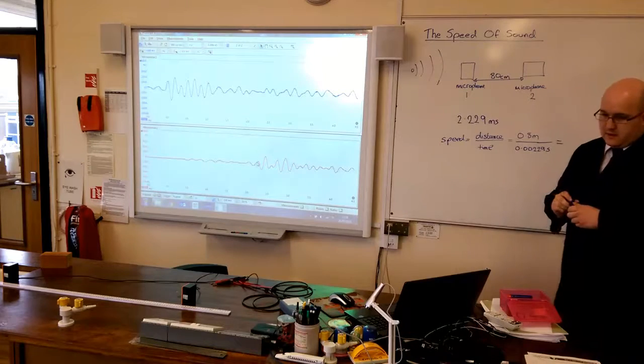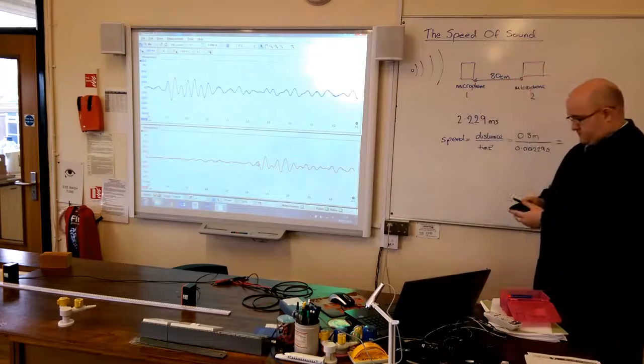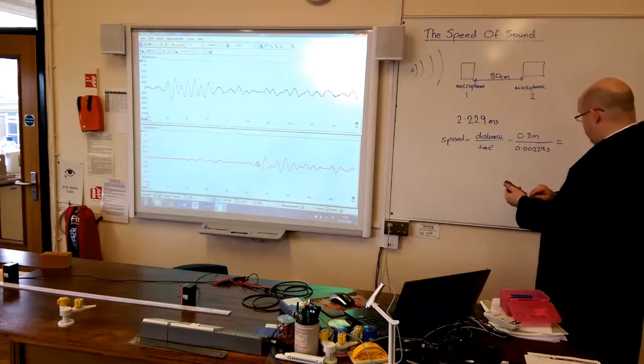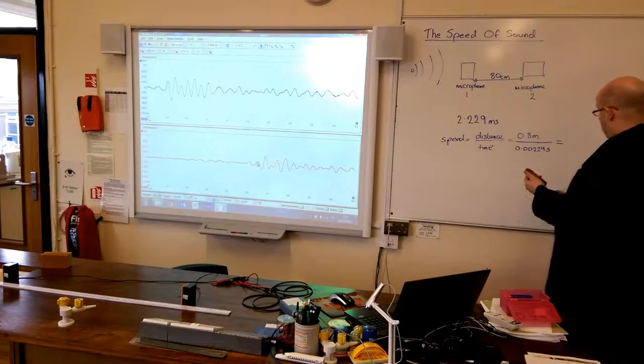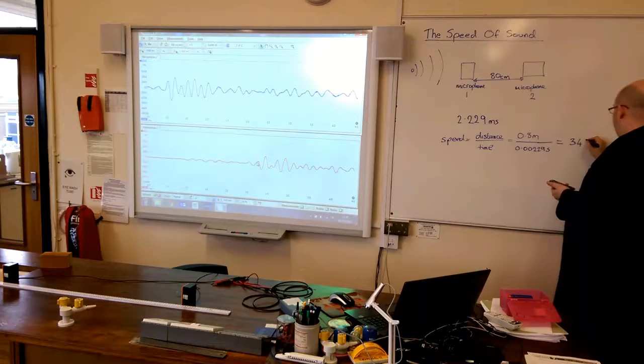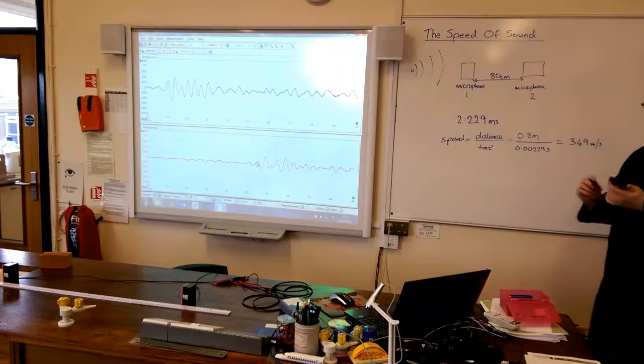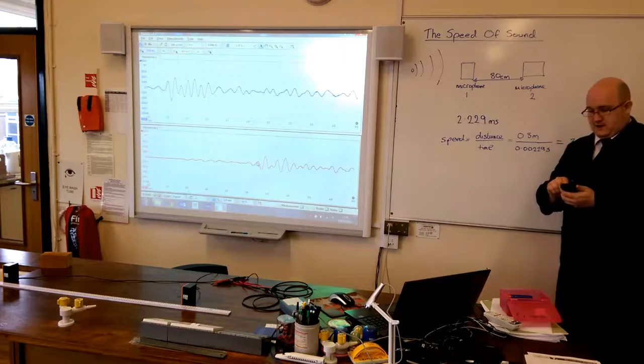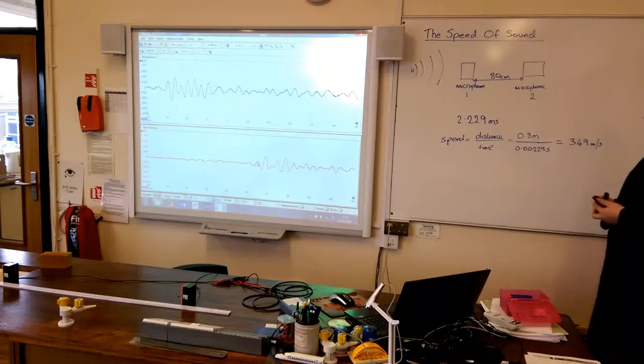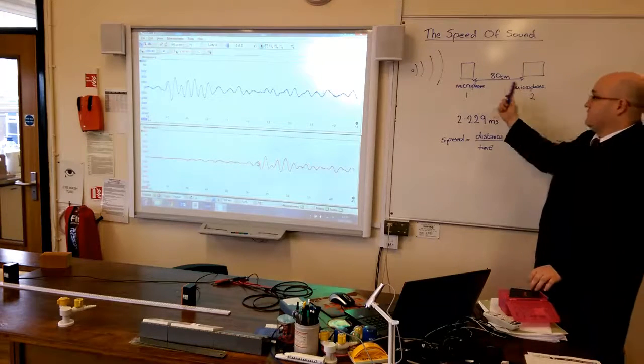So, if I tap that in my calculator, that will tell me how fast the sound travels between those two microphones. Let's see. 0.8 divided by 0.00229. Wow, that's not bad at all. So, that works out at 349 meters per second. Now, the speed of sound depends on the weather, on the temperature, and how much humidity there is in the air. And so, I know it's around 340 meters per second, but that's not bad at all. So, that's how fast it travels between the two microphones.